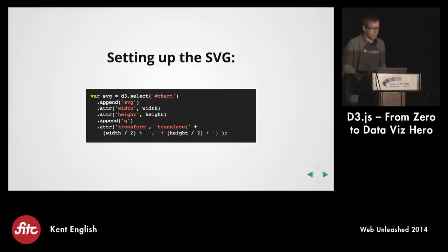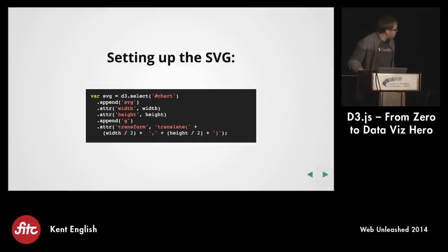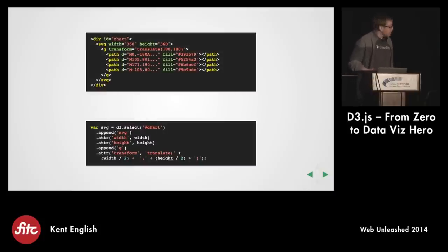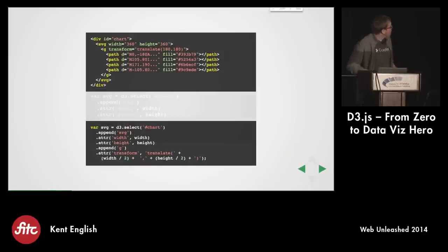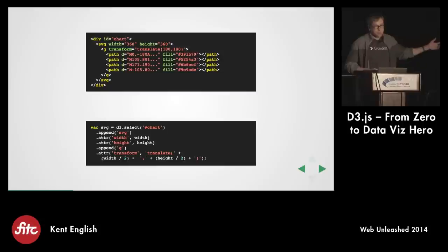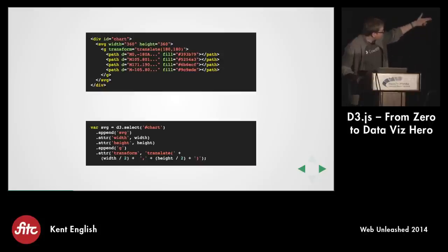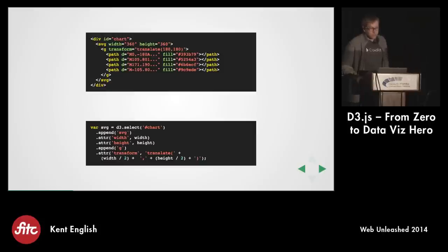Let's look at how we create that SVG using D3. At first glance it looks like a lot of lines, but if we look at it line by line, it's really not that bad. We're selecting the chart element — if you've used jQuery, this is going to look very similar. We select an element using a query selector, then we append an SVG to it, set the width and height, add a G element to that, and translate it so it's centered. You can see that the D3 code matches almost exactly to what we see in the markup.